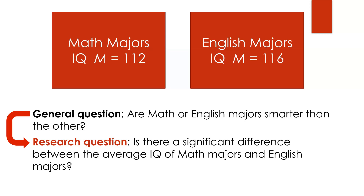Notice a few features of the research question compared to the general question. I'm taking math and English majors, and I'm taking their 'smartness' and applying something we can measure. How do I measure smartness? Let's say I measure by IQ, and I take the average IQ, because we like to work with averages — it's one number that can represent a large group of people. If there's a difference between the average IQs of math majors compared to English majors, that tells me something. So that's how we take a general question and make it more specified and scientific — one we can actually put to the test.